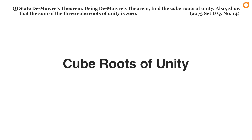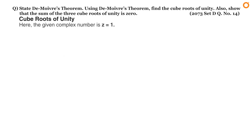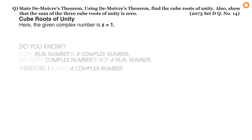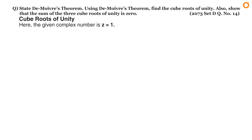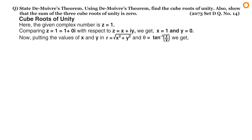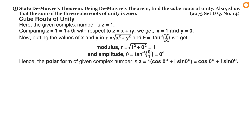Now let's find the cube roots of unity by applying these working rules. Here the given complex number is z equals 1. Every real number is a complex number, so 1 is also a complex number. In step one, express z in polar form. Comparing z equals 1 with z equals x plus iy, we get x equals 1 and y equals 0. Substituting into the formulas gives modulus r equals 1 and amplitude theta equals 0 degrees. Hence the polar form is z equals cos 0° plus i sin 0°.